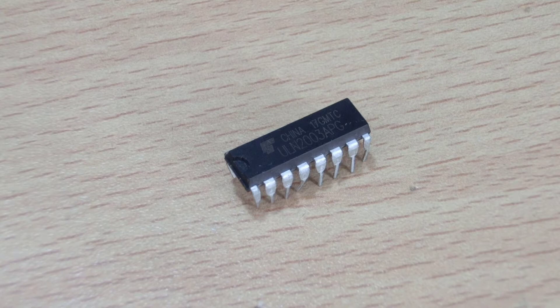...the ULN-2003A IC is an array of 7 NPN Darlington transistors capable of delivering 500mA at 50V. It features common cathode flyback diodes for switching inductive loads. This chip can be paralleled for even higher current output by stacking one chip on top of another both electrically and physically. This means we don't need any extra components for this circuit.